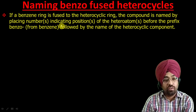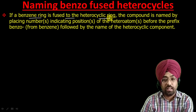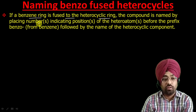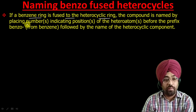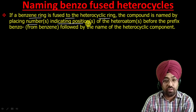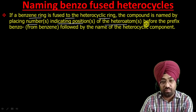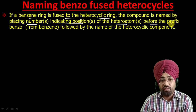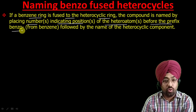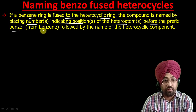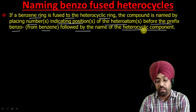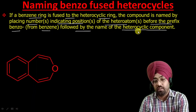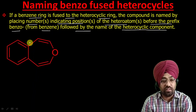The rule says that if a benzene ring is fused to the heterocyclic ring, the compound is named by placing numbers indicating the position of the hetero atom or atoms before the prefix 'benzo' (which comes from benzene), followed by the name of the heterocyclic component. Let us understand this with an example.